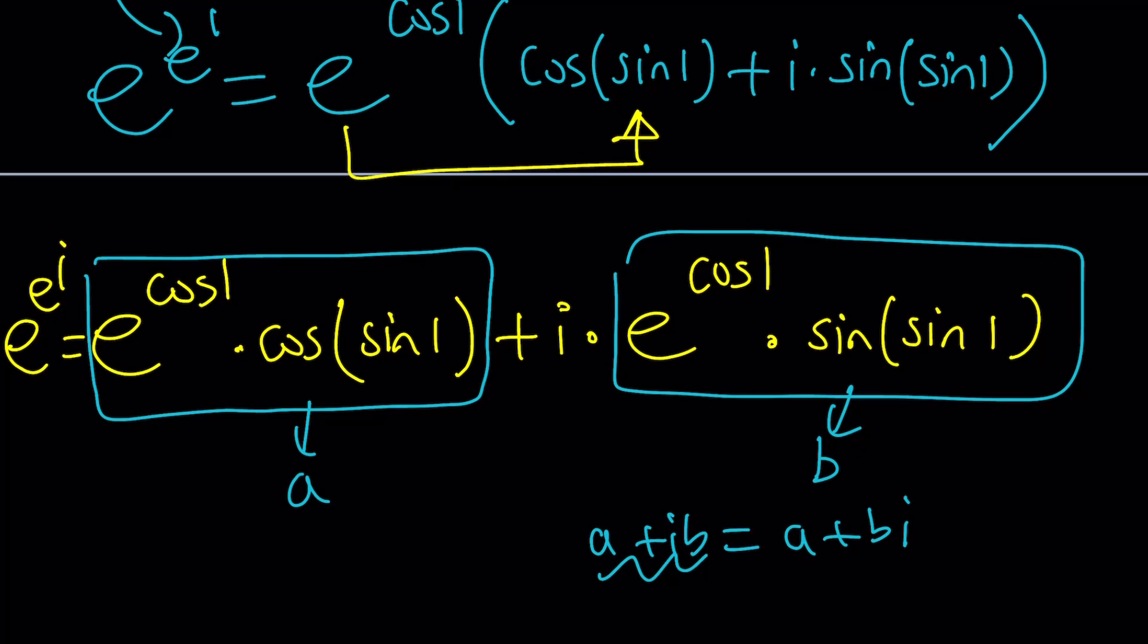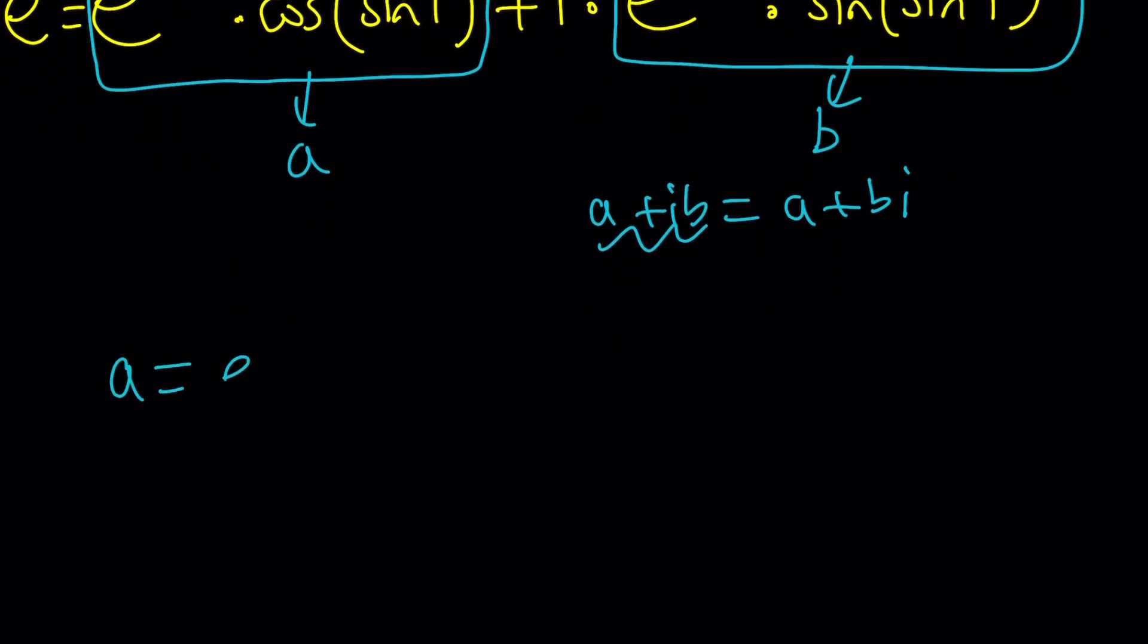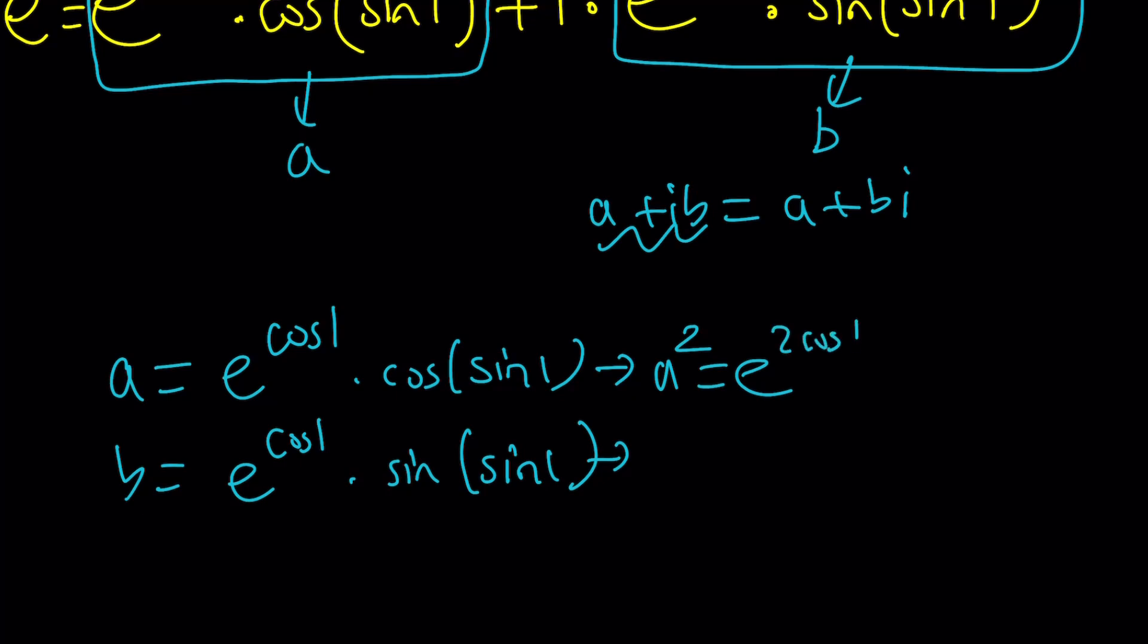So how do you find a squared plus b squared? Easy. Write what a is: cosine 1 times cosine of something. And then b is e to the cosine 1 again, but this time sine of sine 1. And now we're going to go ahead and square each of these expressions. A squared is going to be e to the cosine 1 squared. It's not cosine 1 squared, by the way. It's e to the 2 cosine 1, because you're going to multiply the exponents by 2, times cosine squared of sine 1. And b squared is going to be e to the 2 cosine 1 again, times sine squared of sine 1.